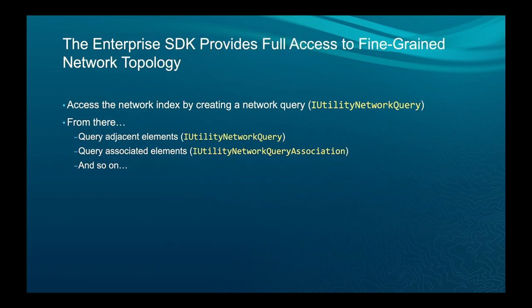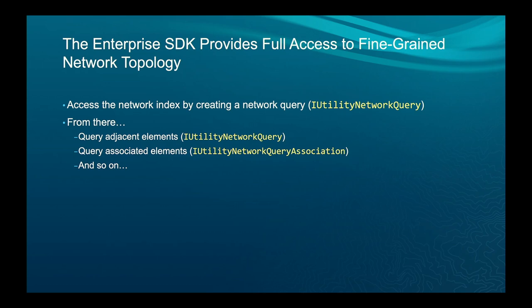Another option is using the Enterprise SDK, which provides full access to fine-grained network topology. You can do a network query via the iUtilityNetworkQuery interface, with different methods and interfaces to query associations and adjacent elements. We're also thinking about a future feature: the ability to extract a section of the network, bring it down locally into a replica, and provide full topology for offline analysis — so you could bring down a subnetwork, do your analysis, and send results back up.